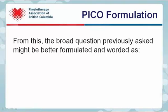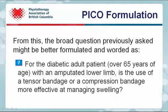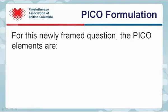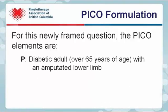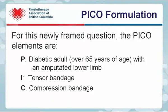From this, the broad question previously asked might be better formulated and worded as: for the diabetic adult patient over 65 years of age with an amputated lower limb, is the use of a tensor bandage or a compression bandage more effective at managing swelling? For this newly framed question, the PICO elements are: the patient is a diabetic adult over 65 years of age with an amputated lower limb; the intervention is a tensor bandage; the comparison intervention is a compression bandage; and the outcome is reduced swelling.